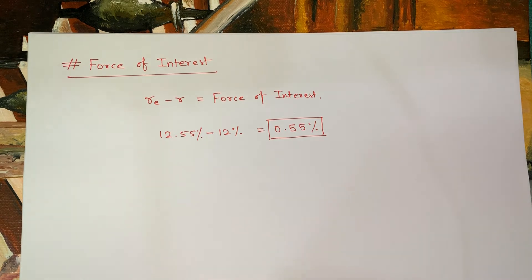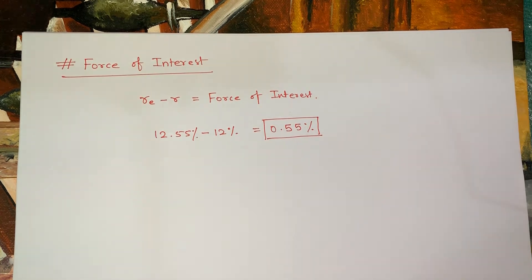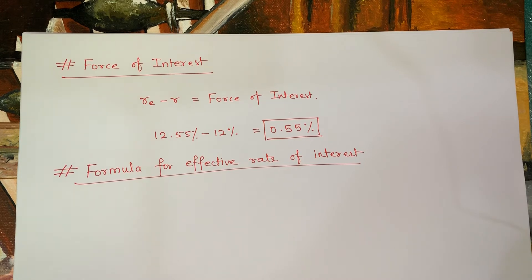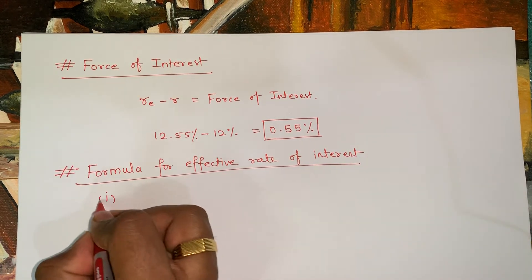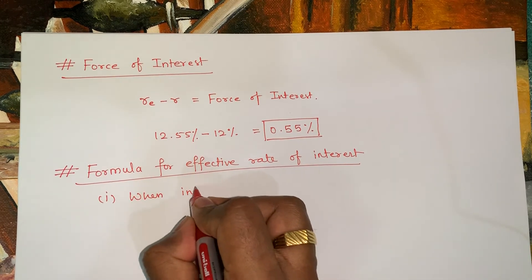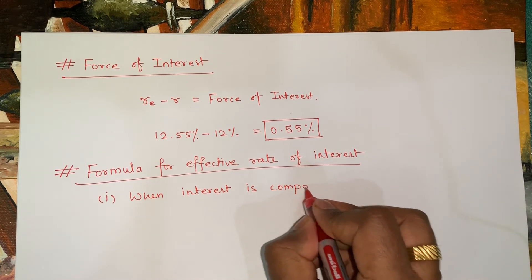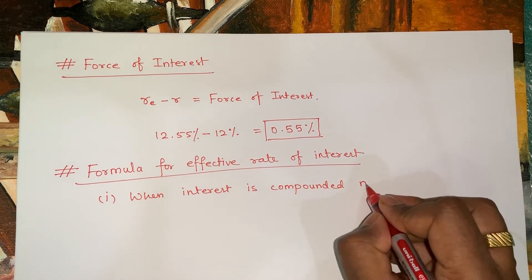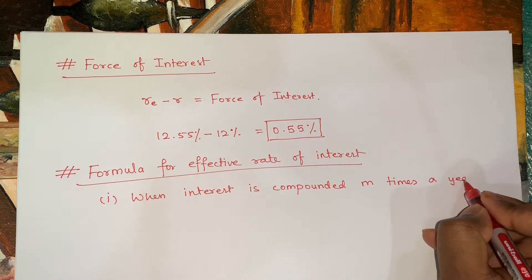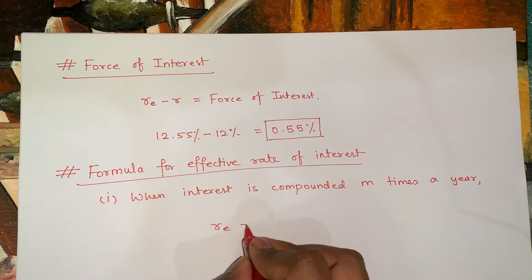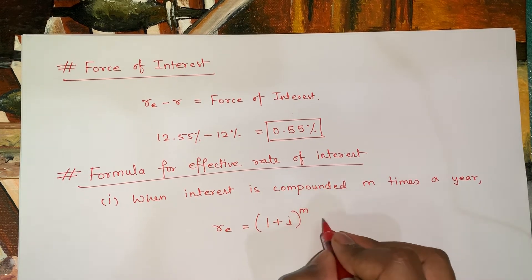Since we are compounding interest more than once in a year, the borrower ends up paying higher interest than the nominal rate, which is termed the effective rate of interest. There are two formulas for computing the effective rate of interest. The first is when interest is compounded m times a year: effective rate = (1 + i)^m − 1.